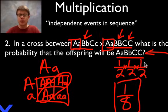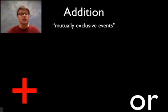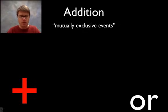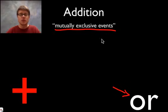That's a solvable problem, so you should practice a few of these — it's a good way to understand what answers you could get without having to build some kind of unwieldy Punnett square. Now let's go to addition. The rule of addition occurs — the tip-off is going to be if you see the word 'or' in the question — and it applies when we have mutually exclusive events, so two things that could go either way.